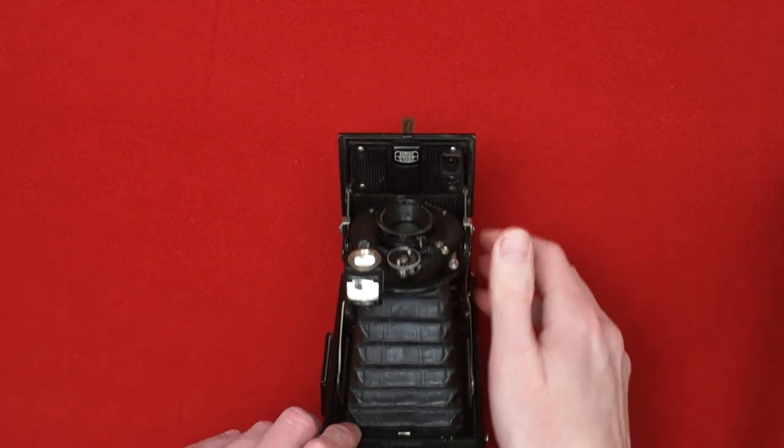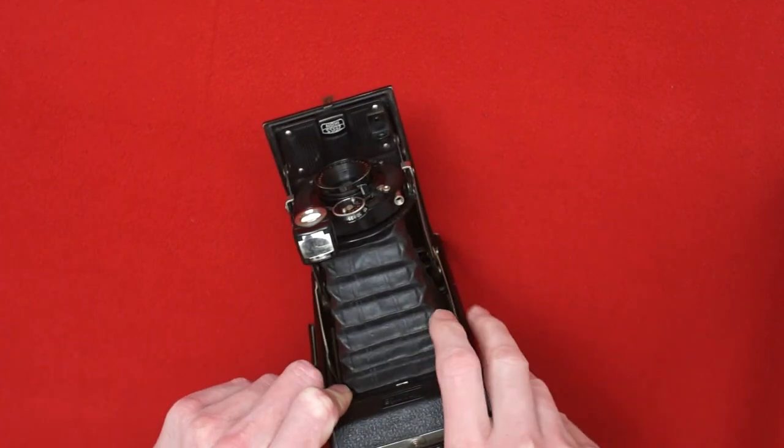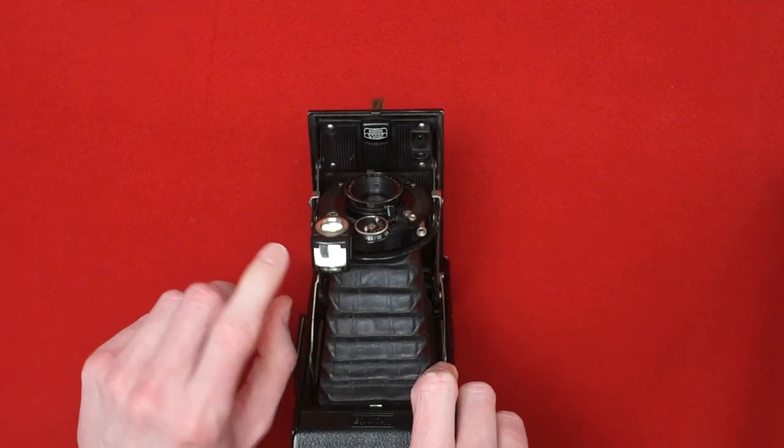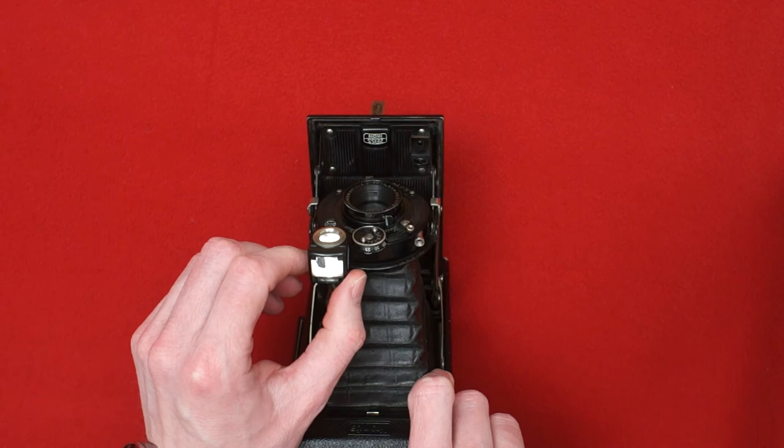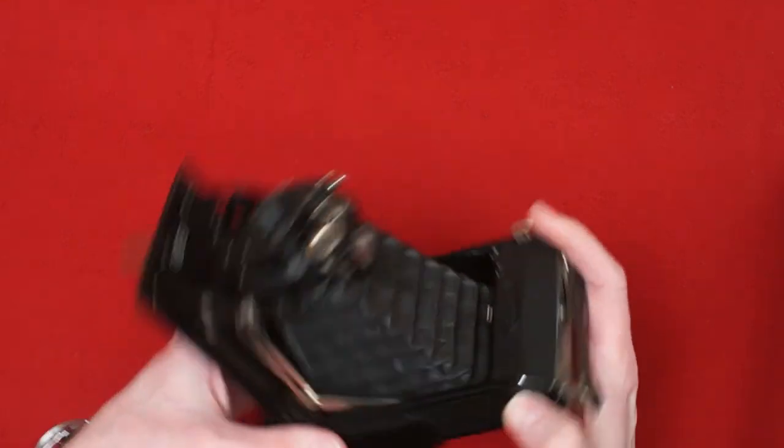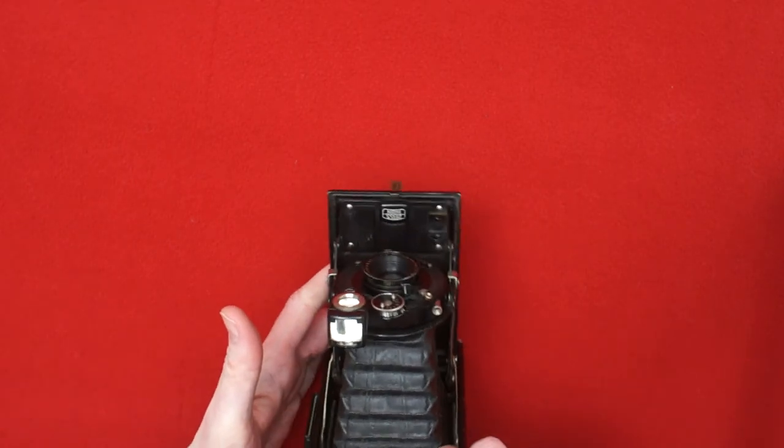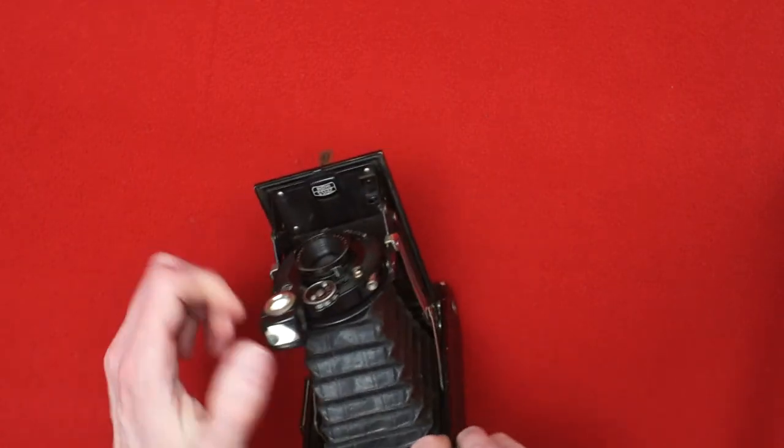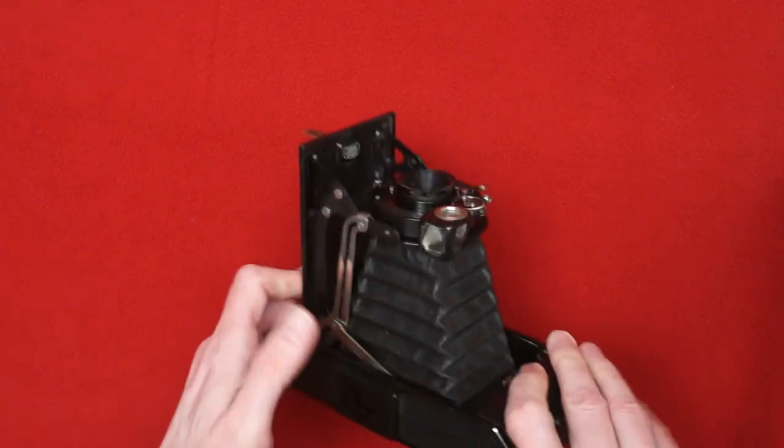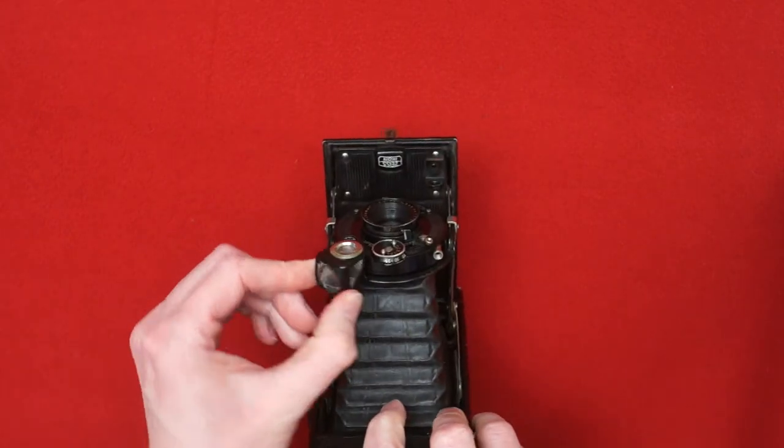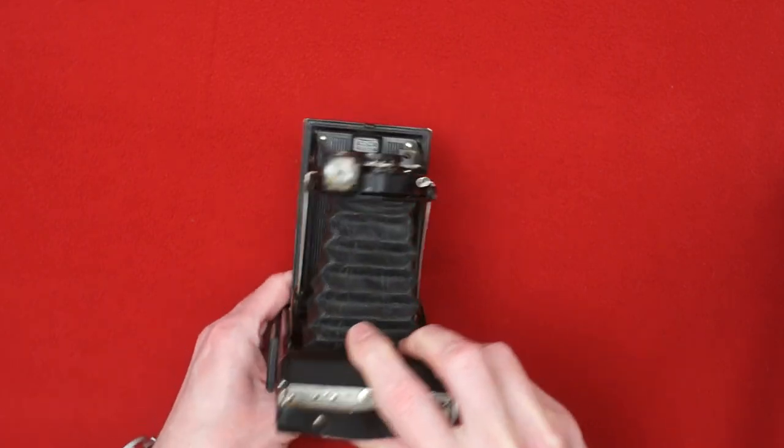For the composing you can use either this brilliant finder, that's how they call this type of finders. It's just a little mirror box, two lenses, you look through it. It actually works fairly well. You can turn it when you use the camera in landscape mode, and like this when you use it in portrait mode.